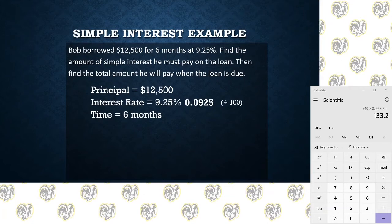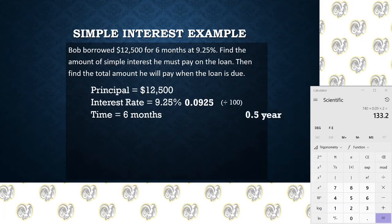For the time period, some people will just know that six months is half a year, and that's fine — you could just go with 0.5. But what happens when the loan is for one month, or seven months, or some other period of time? You need a standard way of doing this. The way that we convert from months to years is always by division. We divide by the number of months in a year — since there are 12 months in a year, we take whatever number of months we have, divide it by 12, and that gives us the number of years. So six divided by 12 gets us 0.5 or half.